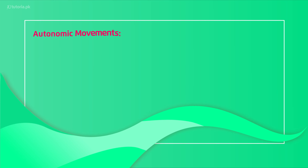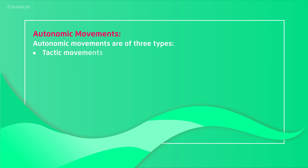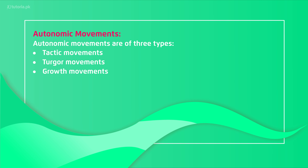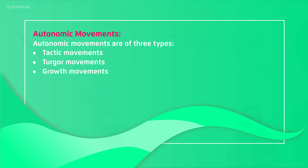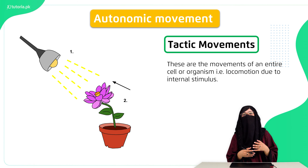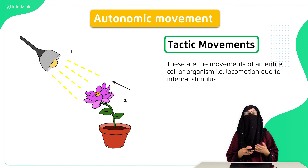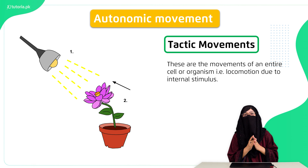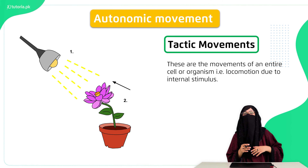If we further study autonomic movement, it is divided into three categories: tactic movement, turgor movement, and growth movement. Tactic movement involves the internal structure of the plant's cell or the cytoplasm moving. The most classical example is cyclosis, which is the cytoplasmic streaming of the cytoplasm of the plant cell.